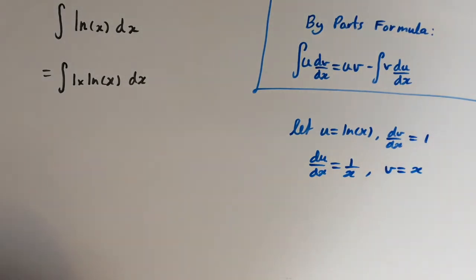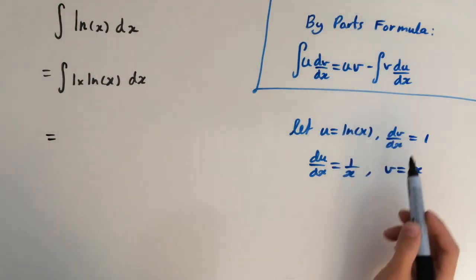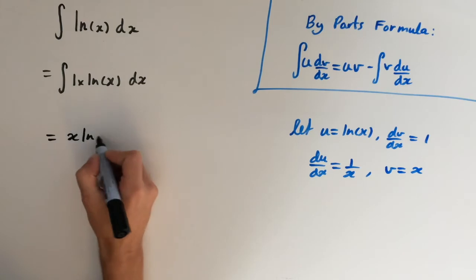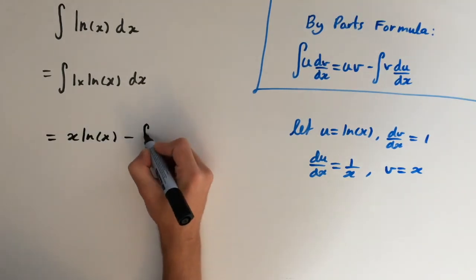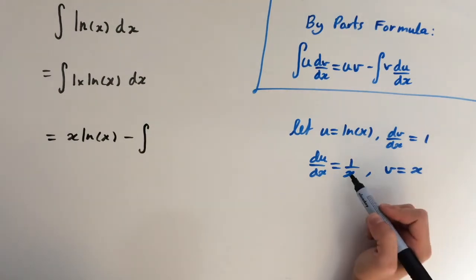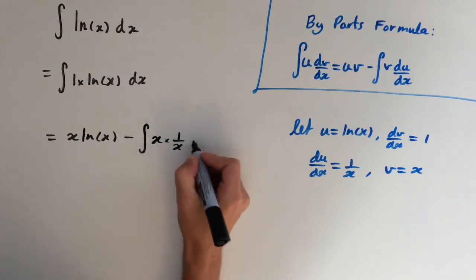So let's plug this back in. So we're going to get u times v which is ln(x) times x minus the integral of v times du/dx. So x times 1 over x dx.